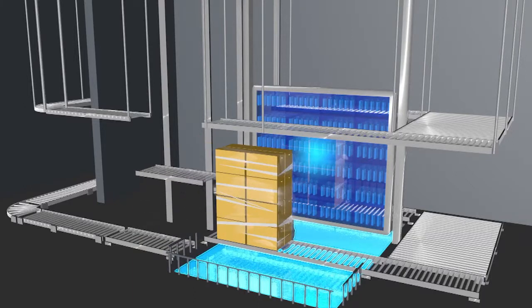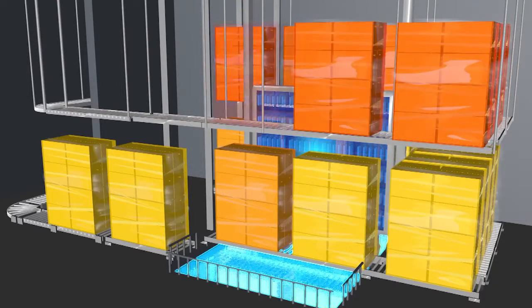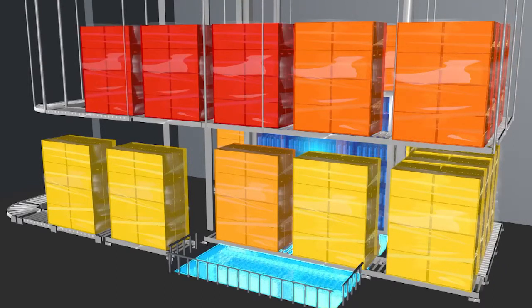The necessary radiation dose is achieved by conveying the products multiple times around the radiation source, with up to 24 pallets in the radiation field at the same time.